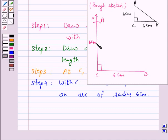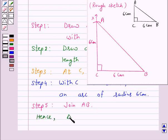Now our next step is join AB. Hence triangle ABC is now obtained where the measure of angle C is 90 degrees and AC is equal to BC is equal to 6 cm.